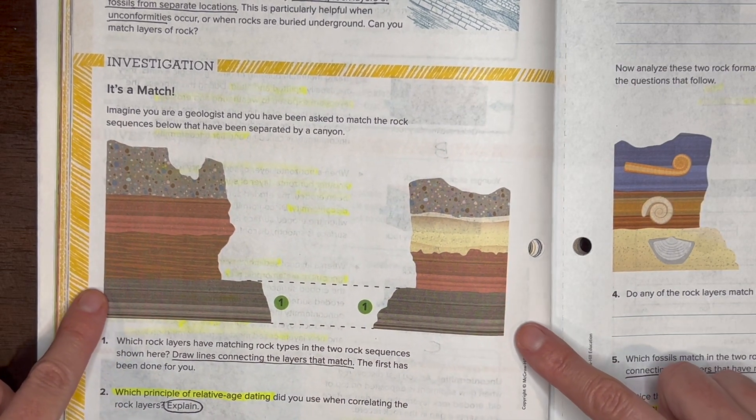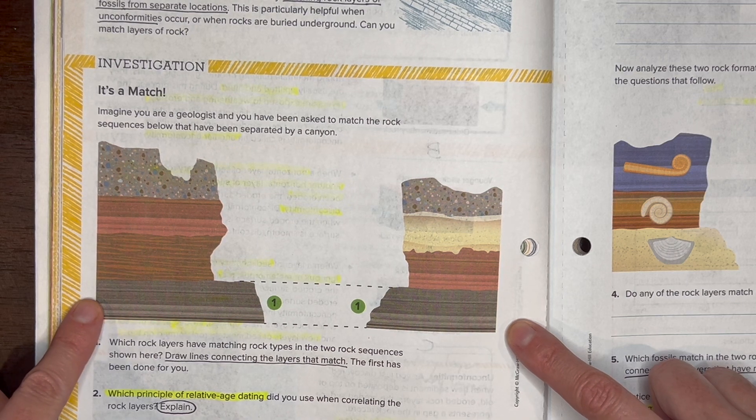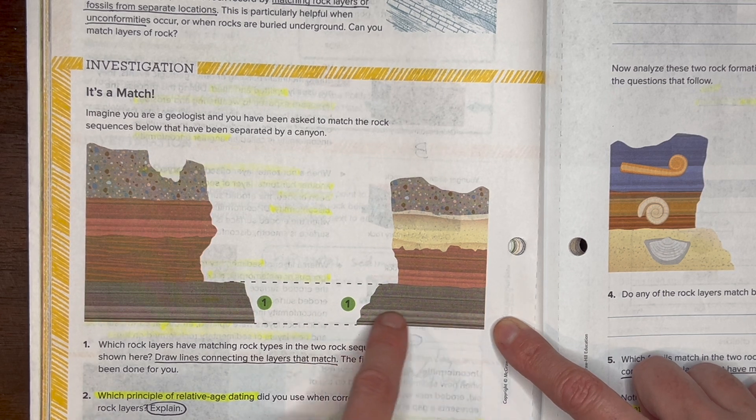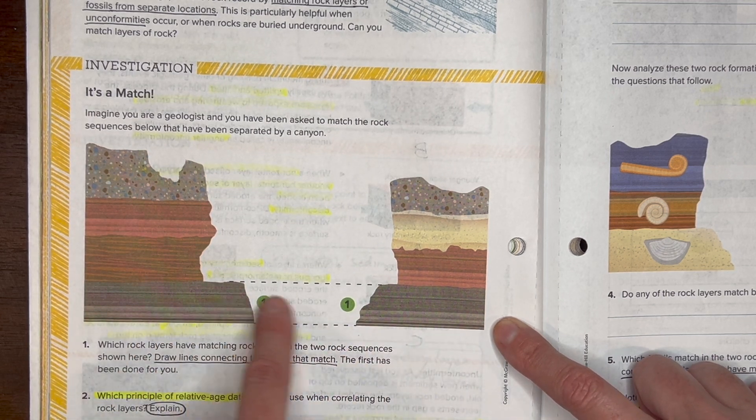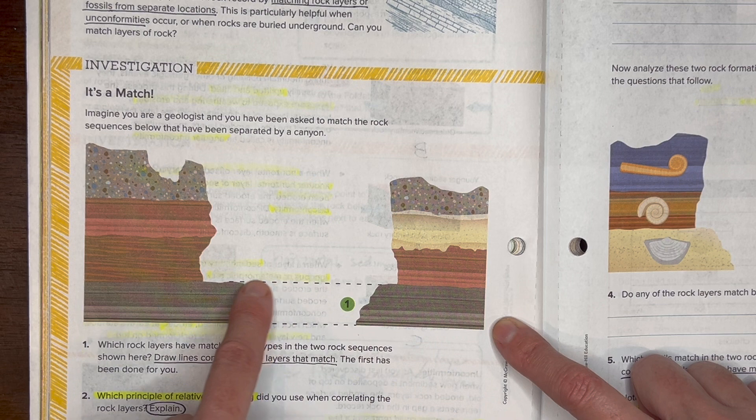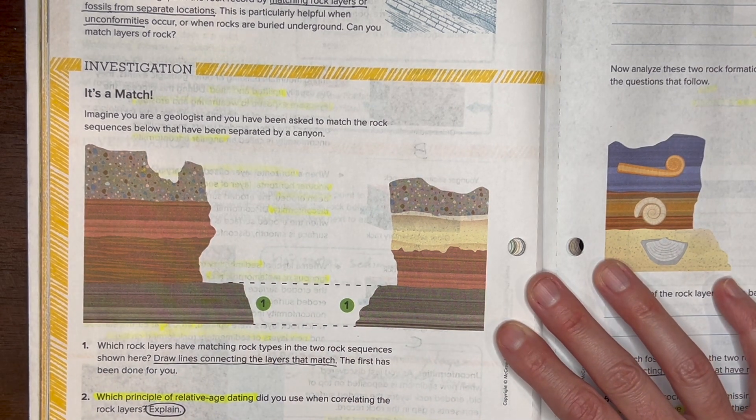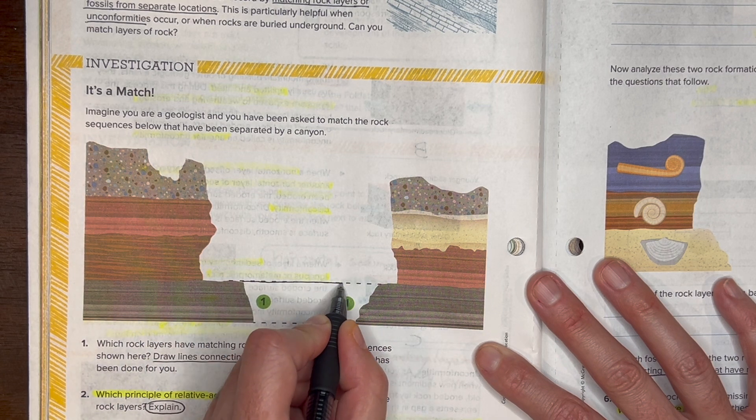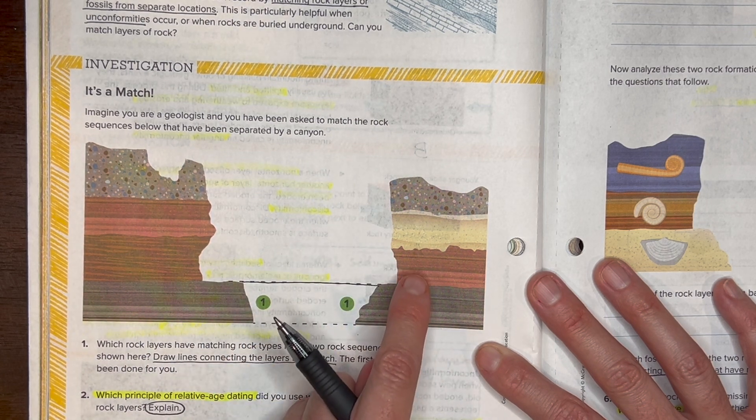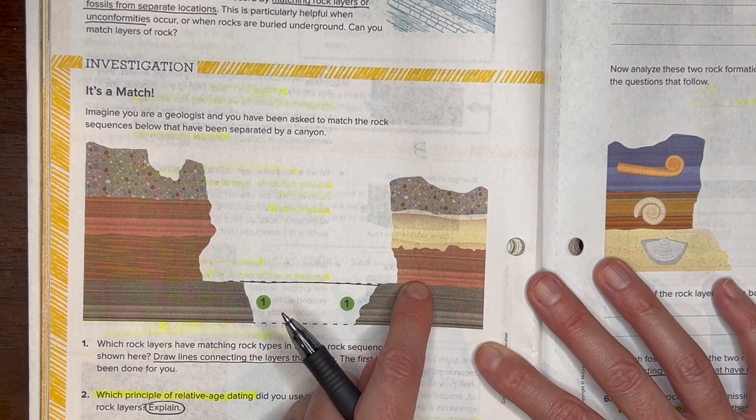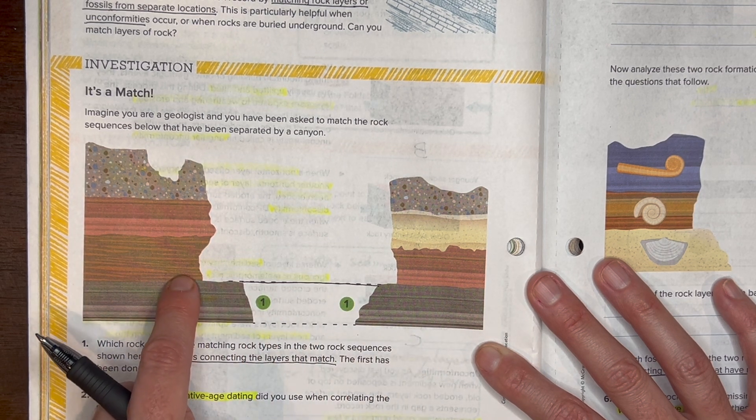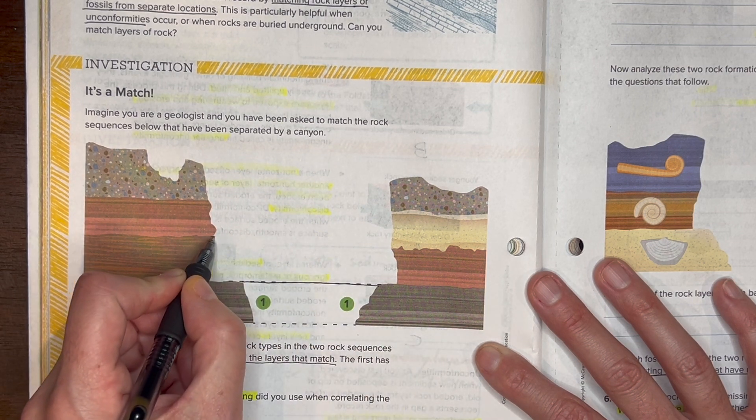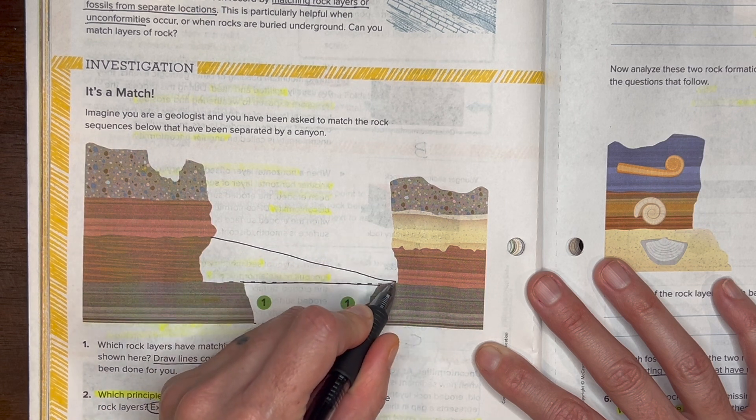Let's look at which rock layers have matching rock types in the two sequences. We're going to draw lines across to match the rock types. So see, this is like brown lines, so those match, so we draw a line across. Let's match the other ones. Here's a red one here, but there's not a red one right here, there's a brown one, but I don't see the brown one over here, so I want to go from here to here, those match up.